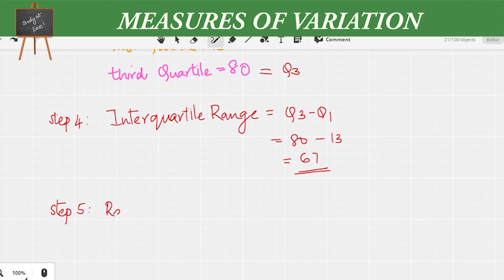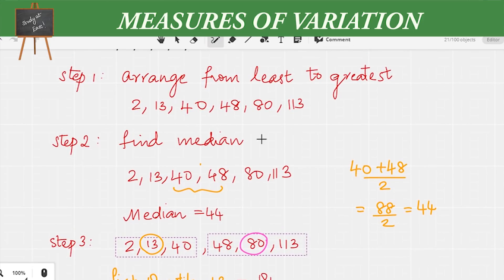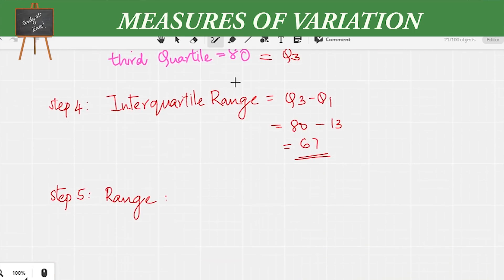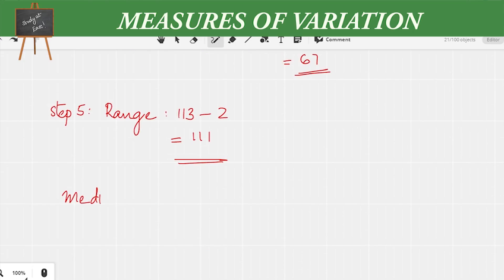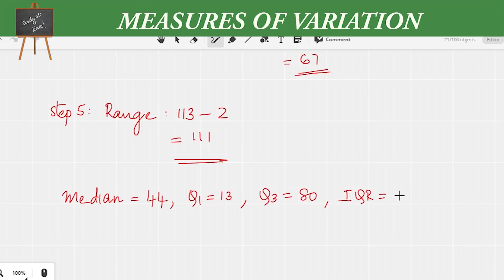The last measure is the range. Looking at the whole data, the numbers are arranged from small to big. The greatest value is 113 and the smallest is 2, so the range is 113 minus 2, which equals 111. To summarize: the median is 44, Q1 is 13, Q3 is 80, IQR is 67, and the range is 111.